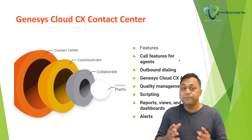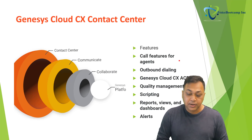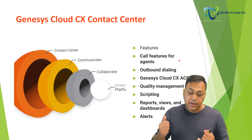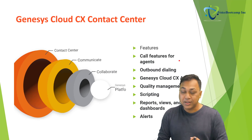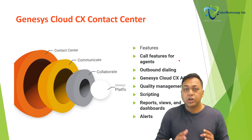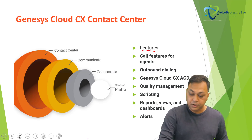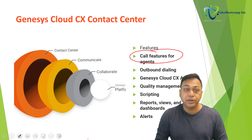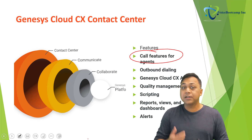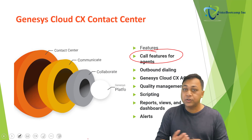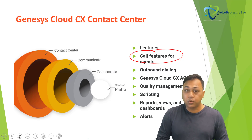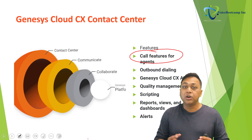The cloud contact center has many different features, including call features for the agent, outbound dialing, Genesis Cloud CX ACD, quality management, scripting, reporting, and alerts. Regarding call features for the agent: interactions are the front-line exchange of information between the company and its contact — the contact being the customer. These call features include consult transfer, web chat, queue status check, wrap-up code, after call work or wrap-up time, as well as agent assistance.